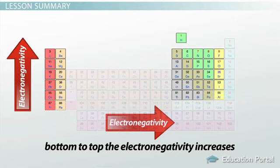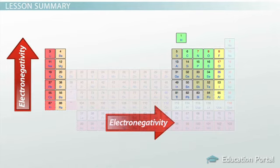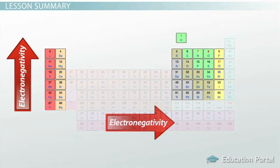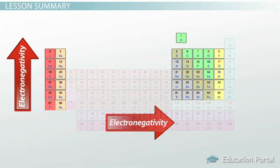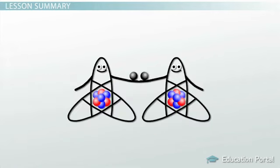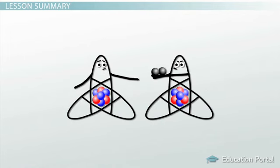The most electronegative elements are found in the top right, such as oxygen, chlorine, and fluorine, while the least electronegative are in the bottom left, such as francium, cesium, barium, and radium. If the electronegativity of two atoms is basically the same, a nonpolar covalent bond will form. If the electronegativity is slightly different, a polar covalent bond will form.